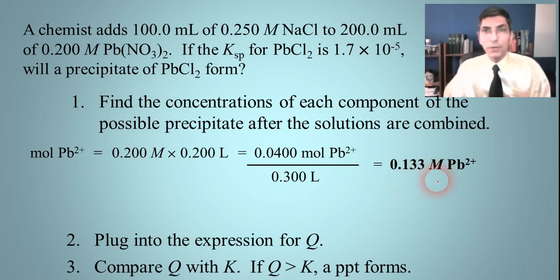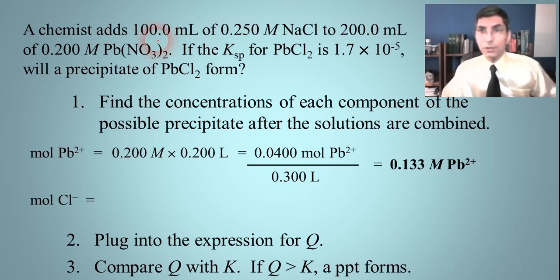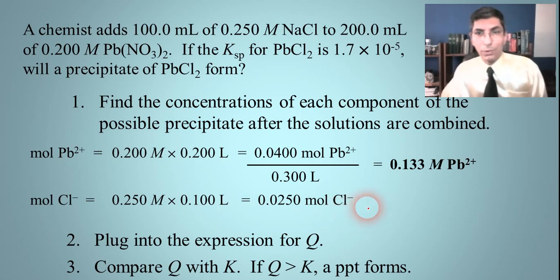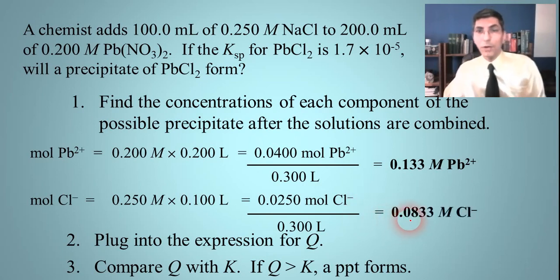Now let's do the same thing for the chloride ions. Moles of chloride equals 0.25 molar times 0.1 liters, which gives 0.025 moles of chloride. To find the molarity, we divide by the new total volume, which is still 0.3 liters. So the molarity of chloride is 0.025 divided by 0.3, which equals 0.0833 molar chloride.